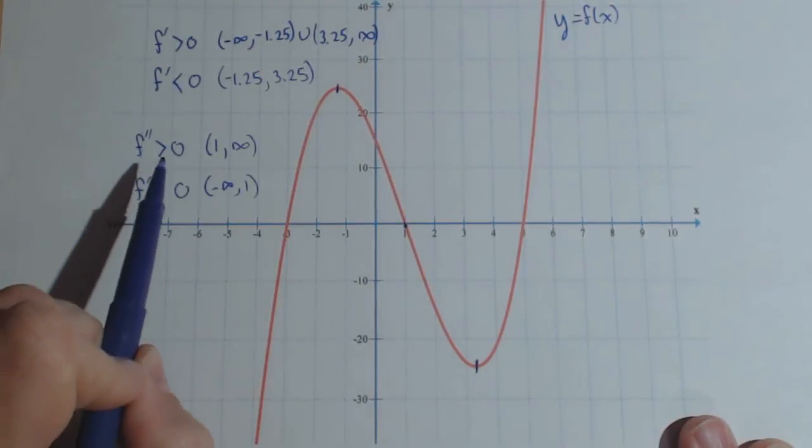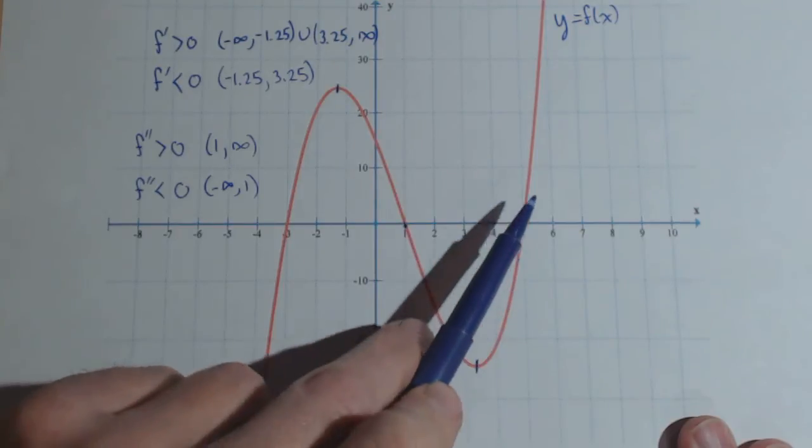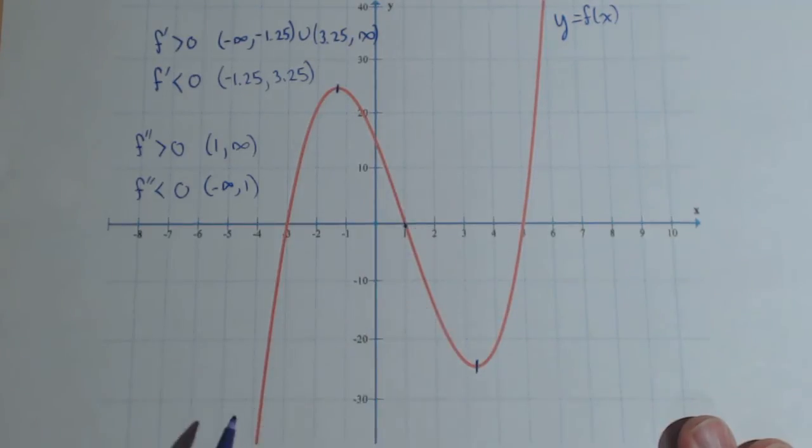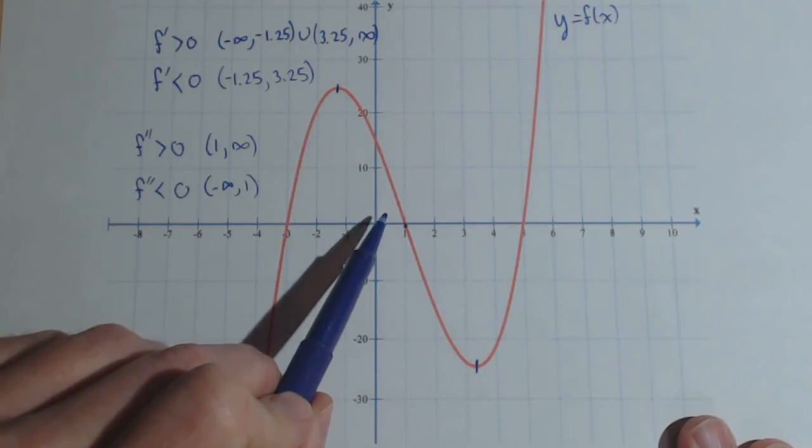Now remember what that means. When the graph is concave up, that means there's an increasing rate of change, because the slopes are becoming more positive. When the graph is concave down, that means we have a decreasing rate of change, because the slopes are more negative.